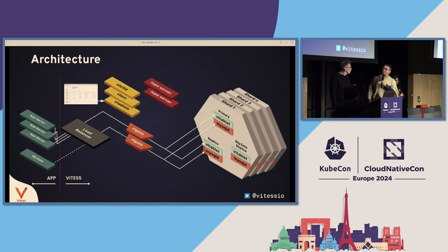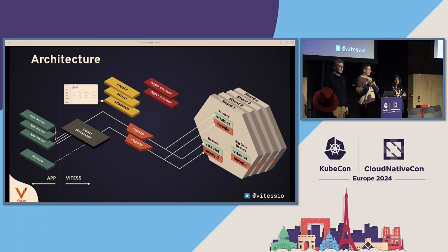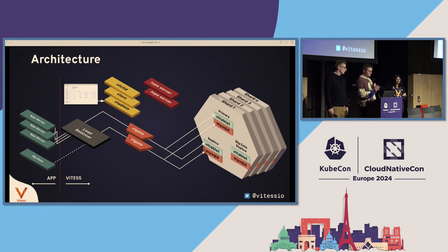In red, we have the topology servers. Those can be usually ETCD or Zookeeper — but usually it's ETCD.